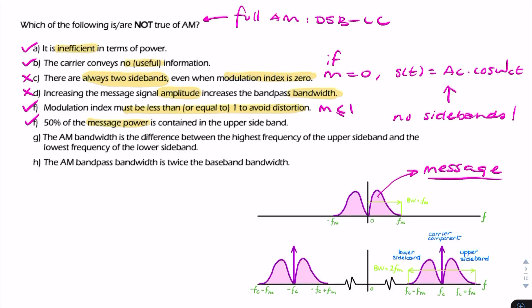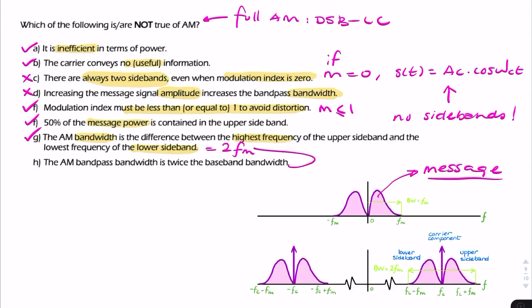Statement G says the AM bandwidth is the difference between the highest frequency of the upper sideband and the lowest frequency of the lower sideband — basically the upper frequency minus the lower frequency. That bandwidth is always equal to twice the message frequency, which is the definition of bandpass bandwidth. The AM bandpass bandwidth is twice the baseband bandwidth — that's true. So of all those statements, two of them were incorrect, and that's your final answer.